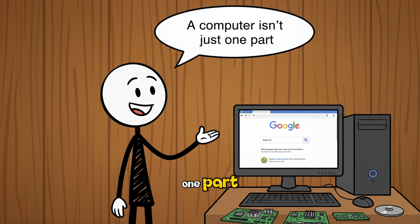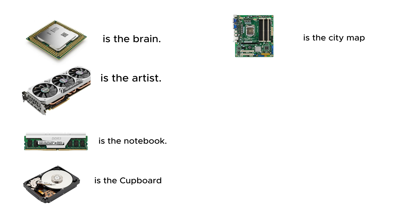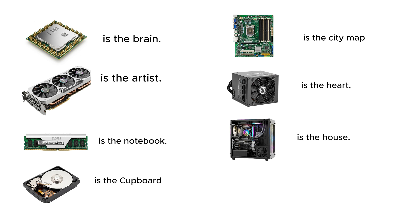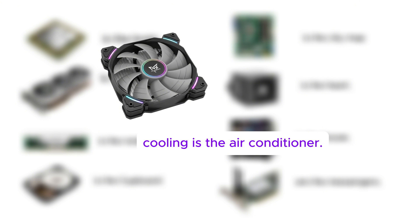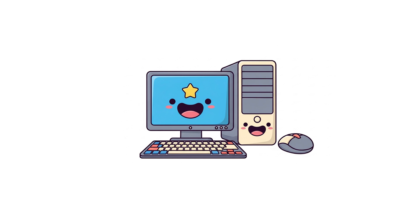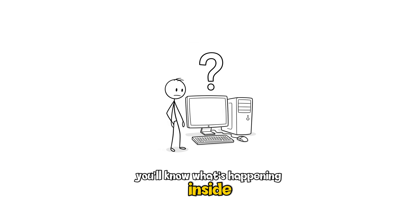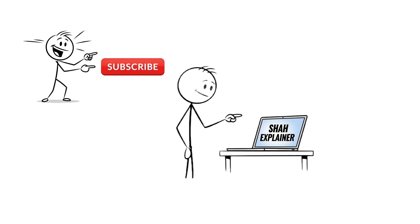So, as we can see, a computer is not just one part, but a team. The CPU is the brain, the GPU is the artist, RAM is the notebook, storage is the cupboard, the motherboard is the city map, the PSU is the heart, the case is the house, wireless components are the messengers, and cooling is the air conditioner. Each part has its own special role, and together they make the computer powerful and smart. So next time you use your computer, you'll know what's happening inside — a team of parts working together, just for you.